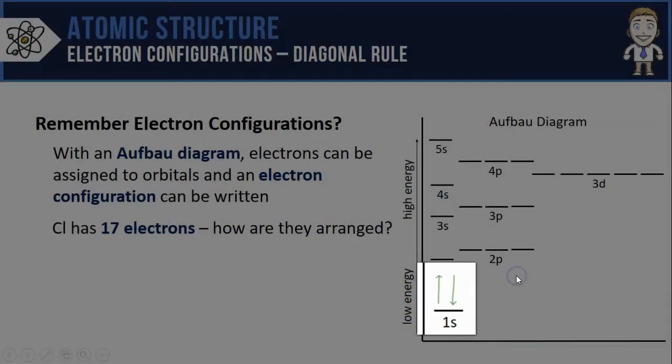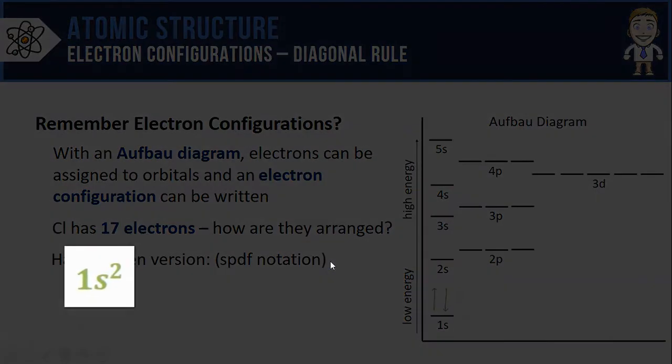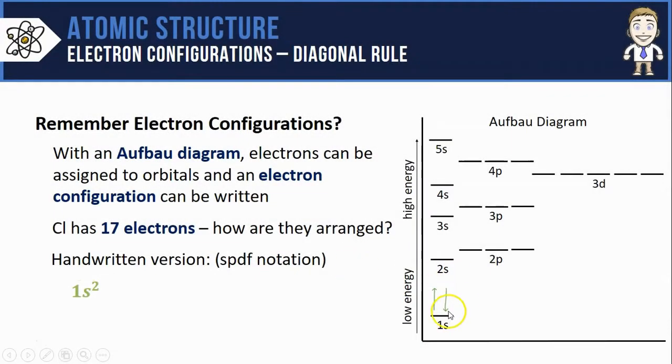You'd put two electrons in the 1s orbitals. Side by side, the handwritten version would look like 1s² for the two electrons there. Then simply move up the diagram to 2s² 2p⁶, 3s². That's 12 electrons so far, so to get up to 17, there's just five more that have to go into the 3p orbitals.